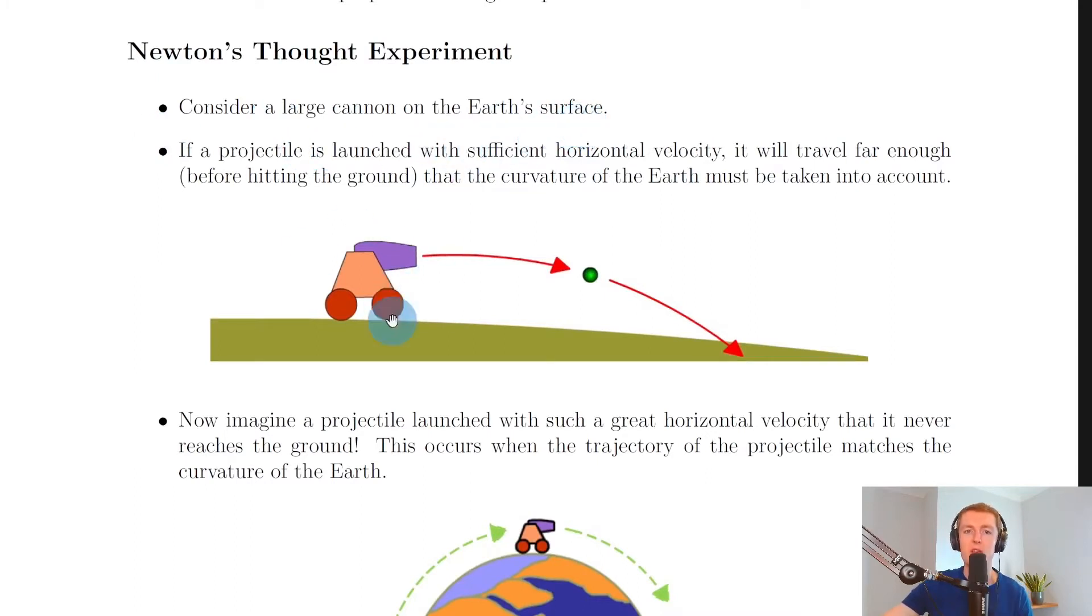Newton's thought experiment went something like this: Consider a large cannon on the Earth's surface. If a projectile is launched with sufficient horizontal velocity, it will travel far enough before hitting the ground that the curvature of the Earth must be taken into account.